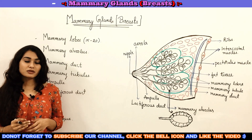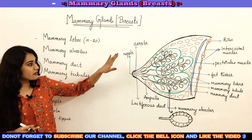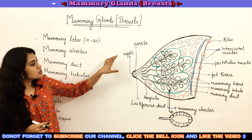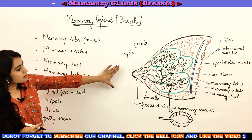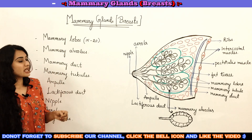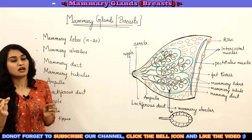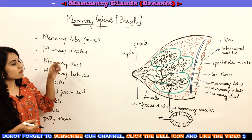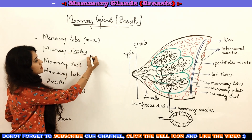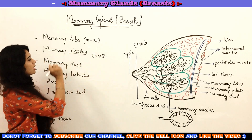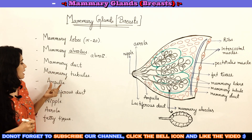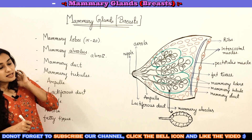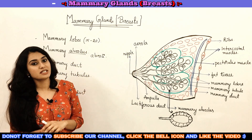Now let us discuss the structure of a mammary gland. Here we have a sectional diagram of the breast. The mammary gland consists of mammary lobes — in each breast there are almost 15 to 20 mammary lobes. It is also comprised of mammary alveolus (plural: alveoli), mammary ducts, mammary tubules, ampulla, lactiferous duct, nipple, areola, and fatty tissue.